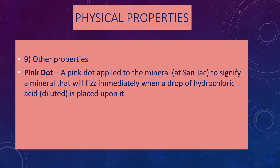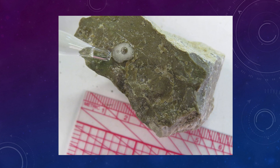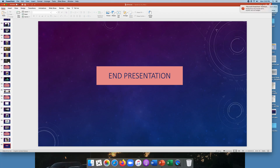Other properties to mention quickly: pink dots have been applied to mineral specimens on campus to show minerals that will fizz immediately or have a strong chemical reaction when a drop of hydrochloric acid is placed on them — calcite is the one that usually has a pink dot. A yellow dot means it will fizz slowly, or fizz better if you make a powder first — dolomite is the one with a yellow dot. This is effervescence or fizzing: this rock has calcite in it and is readily fizzing, so it would have a pink dot. That is the end of the presentation — thank you very much.